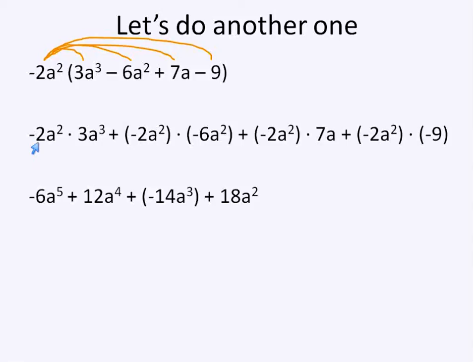And then we just simplify. Again, I'm simplifying in one step, but as you see, it's negative 2 times positive 3 gives you negative 6. a to the power of 2 times a to the power of 3, just add the exponents, 3 and 2 is 5. Negative 2 times negative 6 gives you a positive 12. a to the power of 2 times a to the power of 2 will give you a to the power of 4. And our next part, negative 2a squared times 7a. Negative 2 times 7 gives us negative 14. a squared times a gives us a to the power of 3. And then negative 2 times negative 9 gives us a positive 18 and a squared.